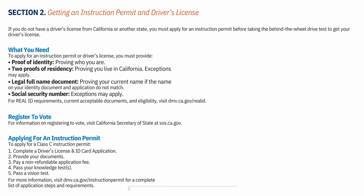Getting an Instruction Permit and Driver's License: If you do not have a driver's license from California or another state, you must apply for an instruction permit before taking the behind-the-wheel drive test to get your driver's license. To apply for an instruction permit or driver's license, you will need specific documentation.